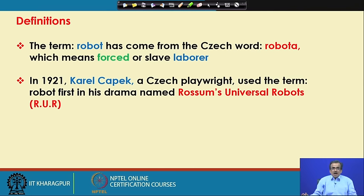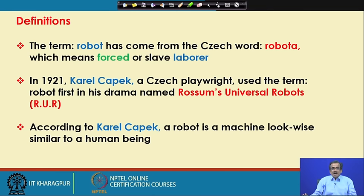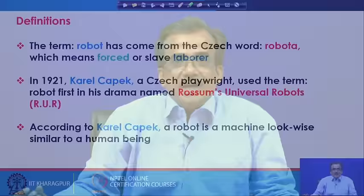The term robot was introduced in the year 1921 by Karel Čapek, a Czech playwright. He wrote one drama, the name of which was Rossum's Universal Robot, or RUR. In that particular drama, he introduced the term 'robota', that is, the robot. But the way he described it, the robot was look-wise similar to a human being, whereas nowadays we use robots which do not look like human beings. The term robot was introduced in 1921, but during that time there was not even a single robot in the world.